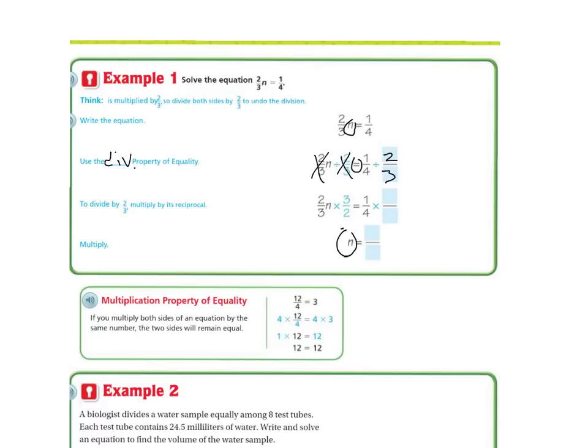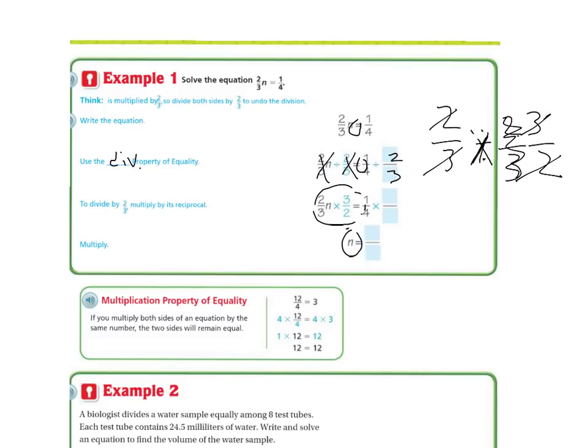Now remember, whenever you're dividing, so I have two-thirds divided by two-thirds, you change the division into multiplication and you do the inverse on this side. So then your threes cross out and your twos cross out. Whatever I did on the first side, I also have to do on this side. So now I'm multiplying by three over two. Three times one is three, and four times two is eight. So N equals three-eighths.